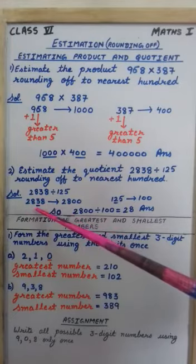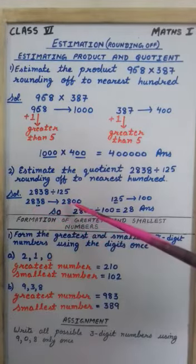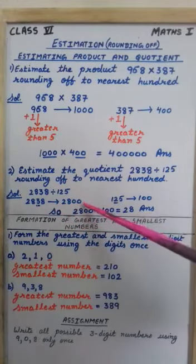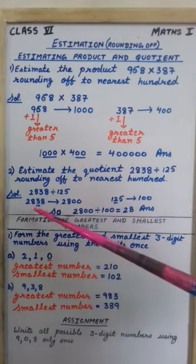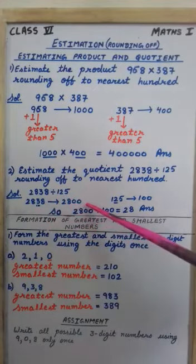Because it is 3 it is less than 5. So only last 2 digits will be replaced by 0. That's why 2838 rounded off to 2800.